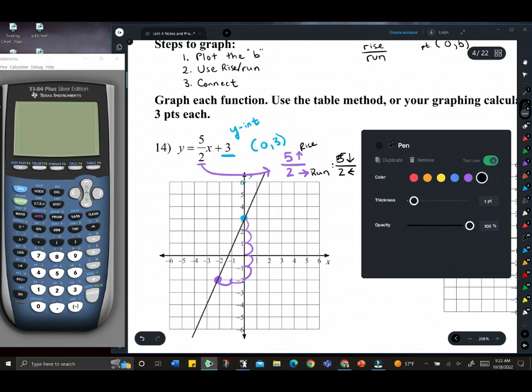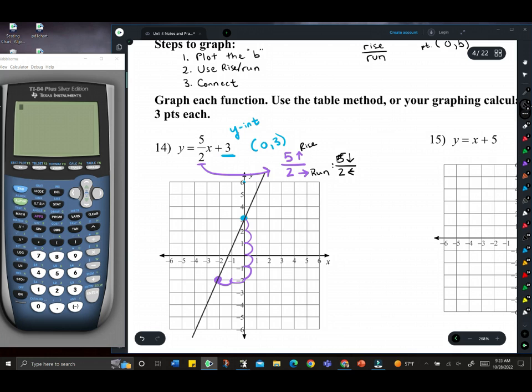One thing to note: we're going to have positive and negative slopes. If the slope is positive, so 5 halves, that's what we consider a positive m value. You're either going up and to the right or down and to the left.